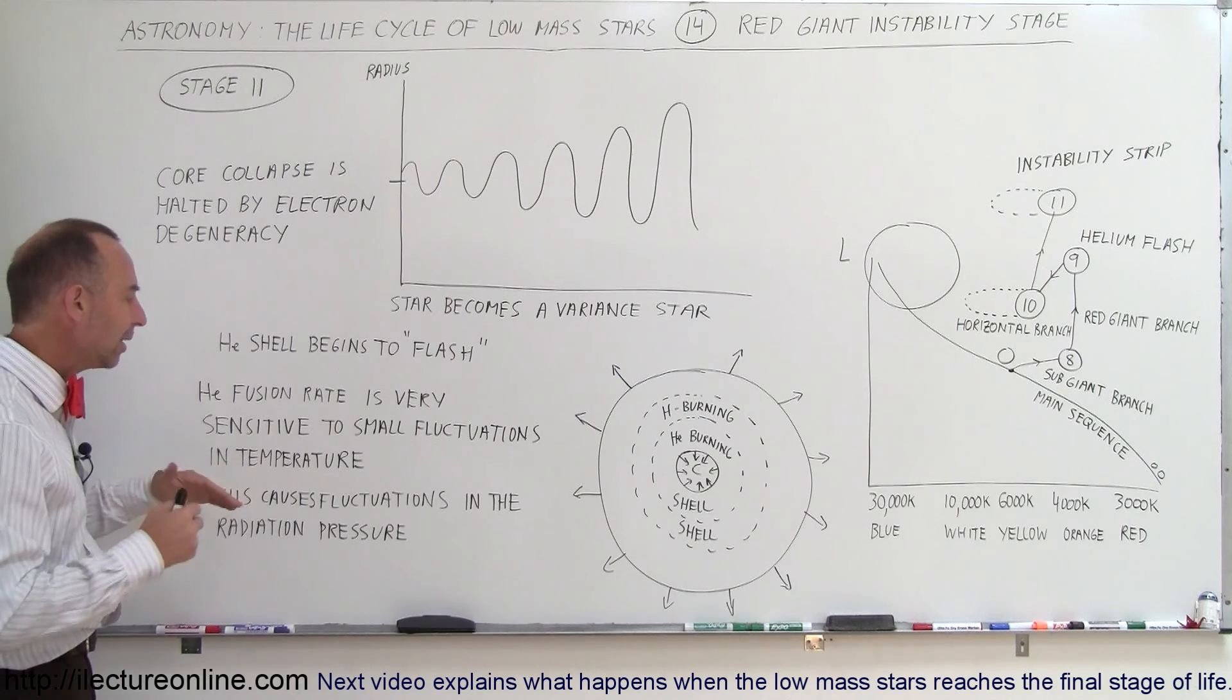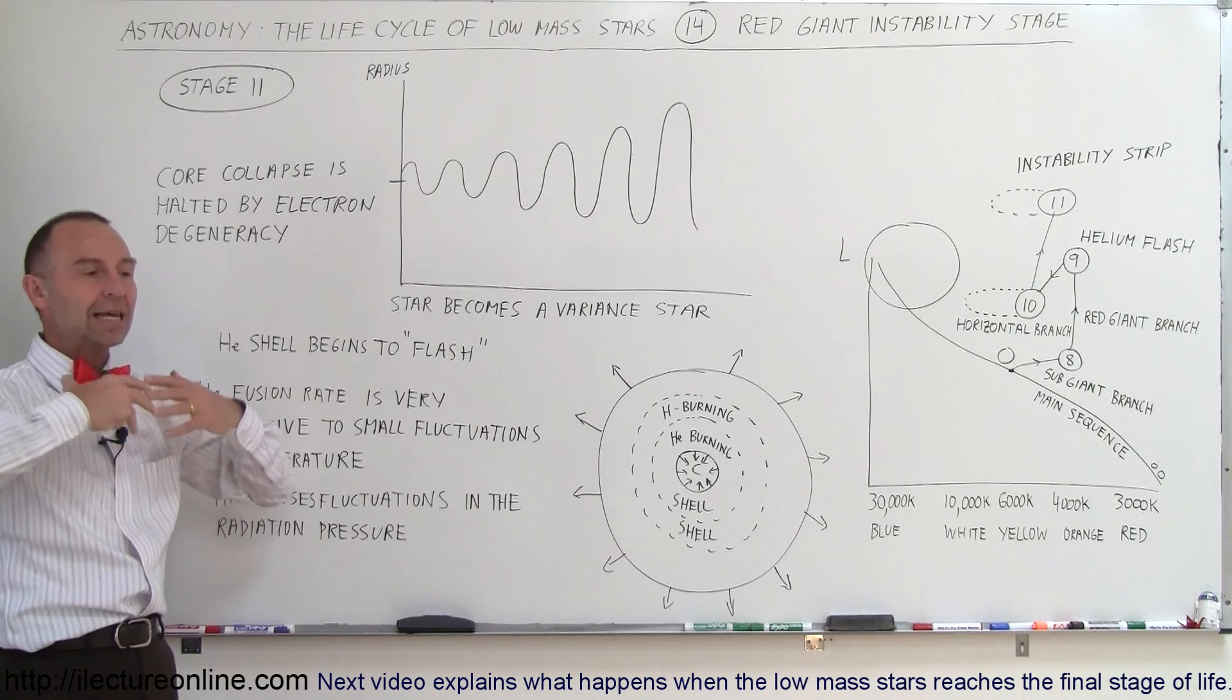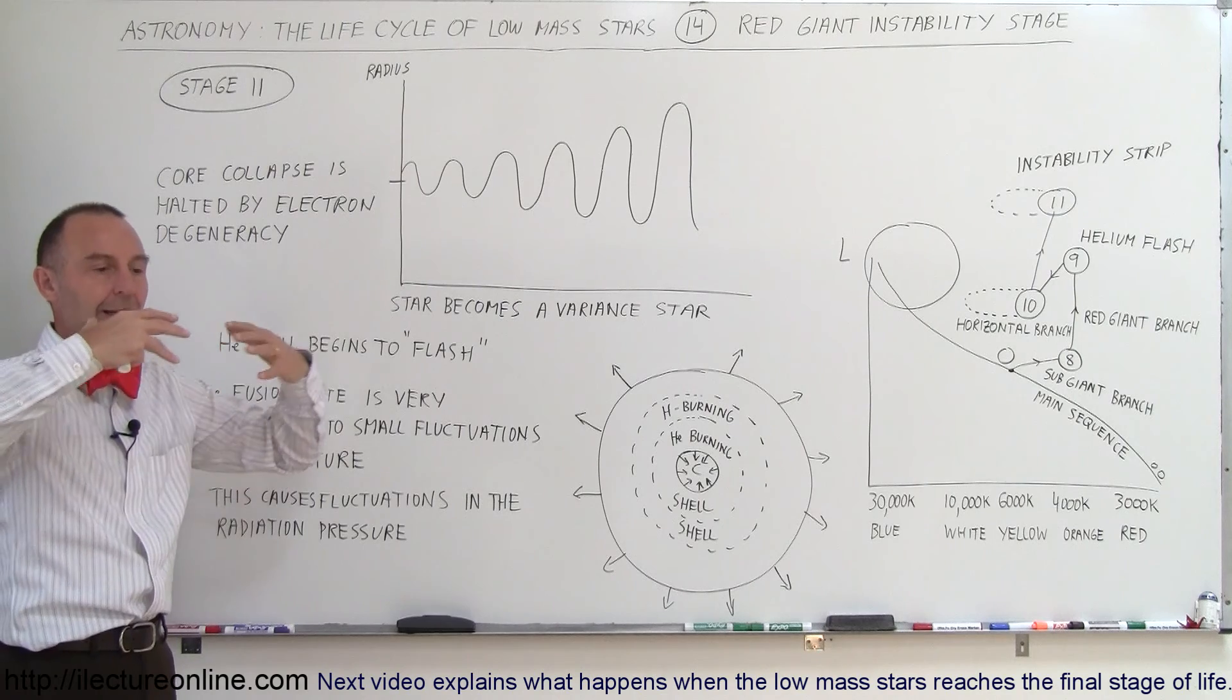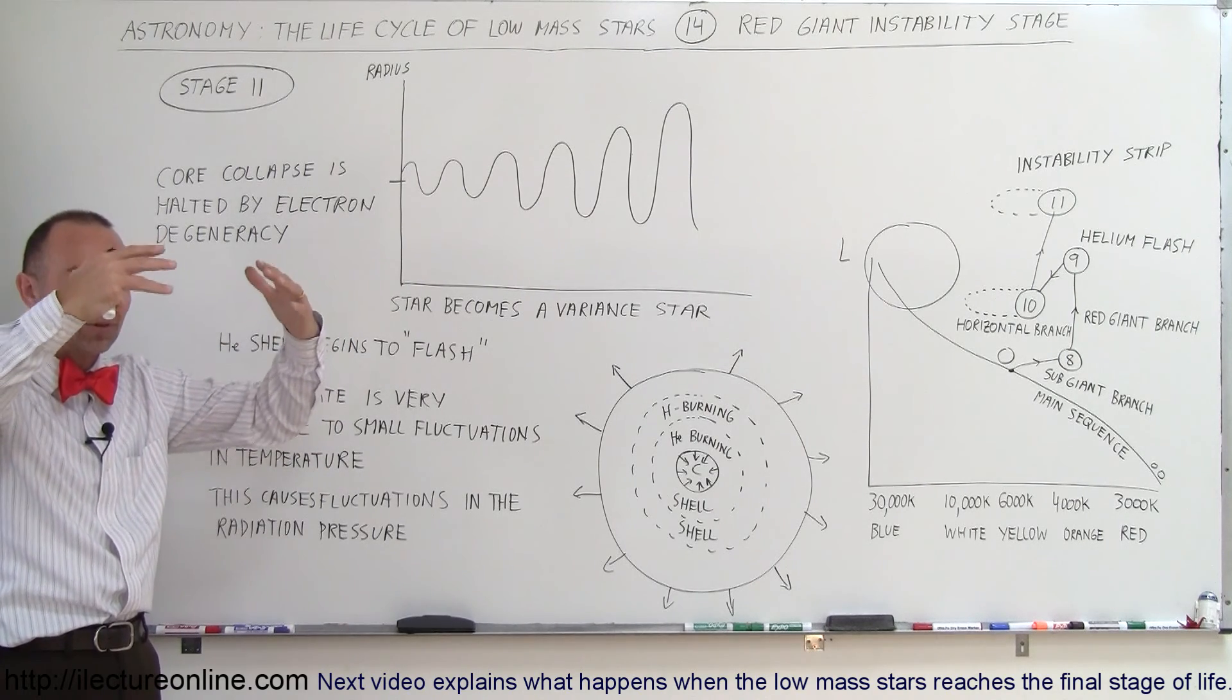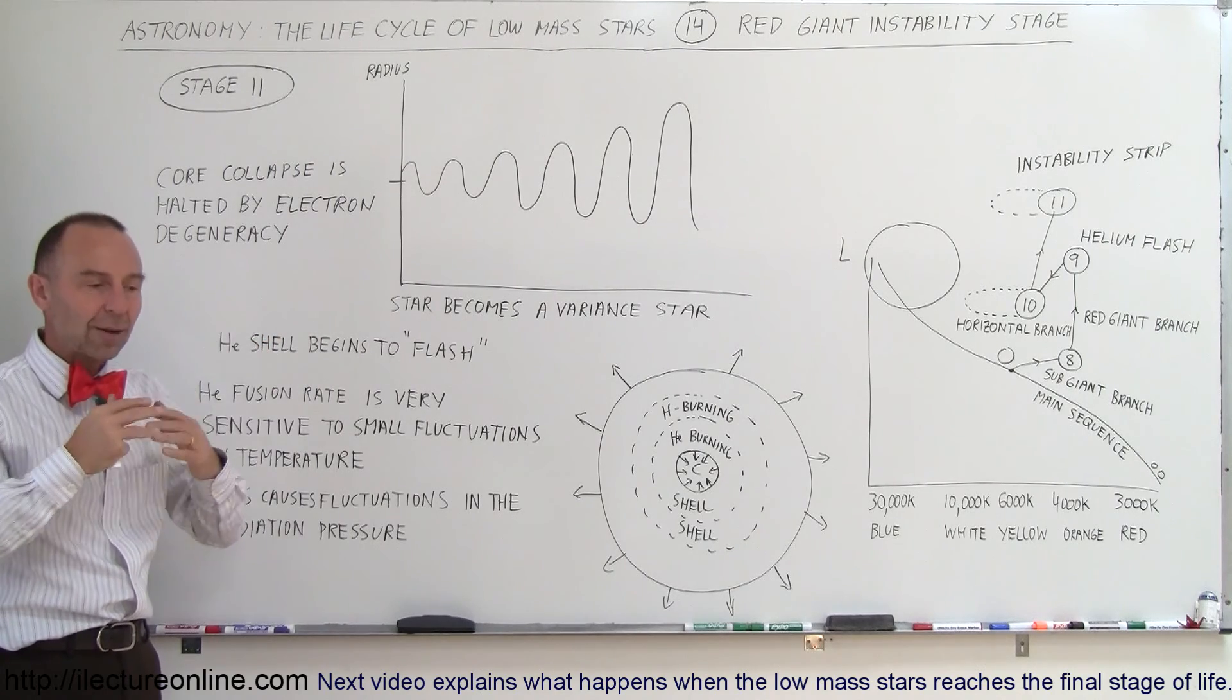Because of that, it causes fluctuation in the radiation pressure. As the helium fusion increases, the radiation pressure increases. As the temperature drops, the radiation drops, the fusion process drops.